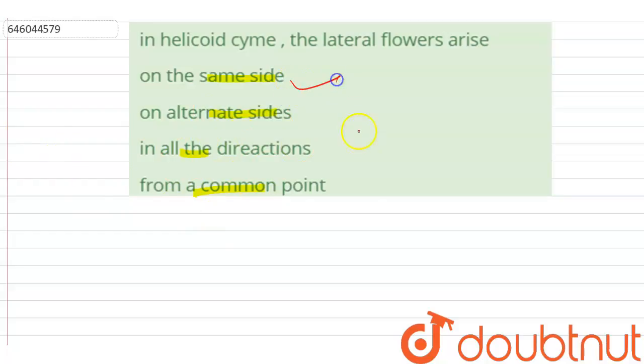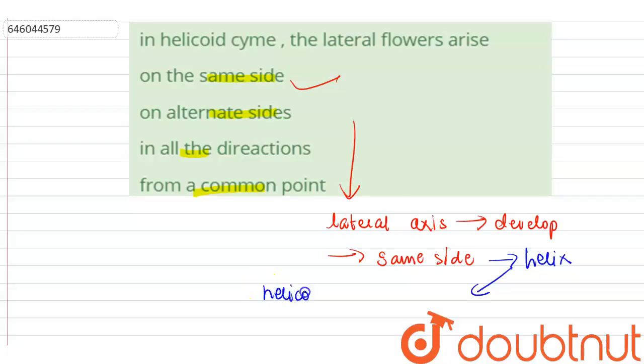The correct option is 'on the same side.' When the lateral axis develops successively on the same side, forming a sort of helix, the cymose inflorescence is called helicoid or one-sided cyme.